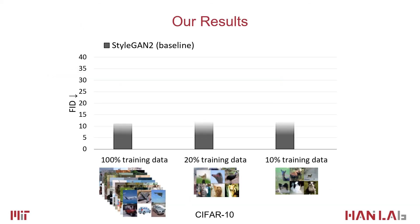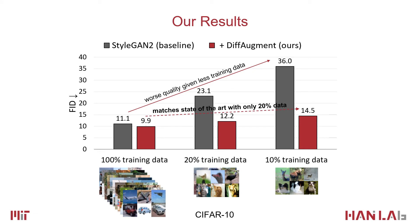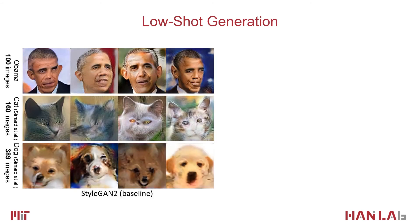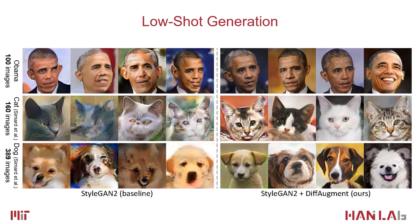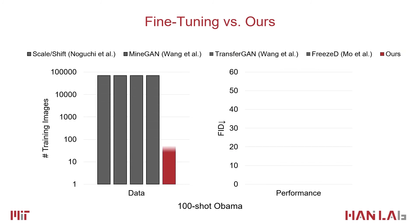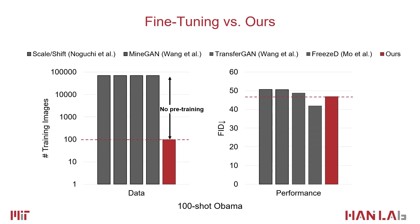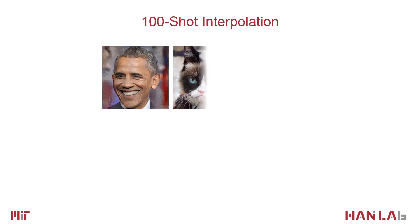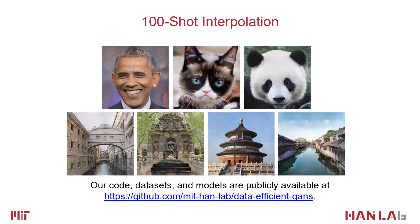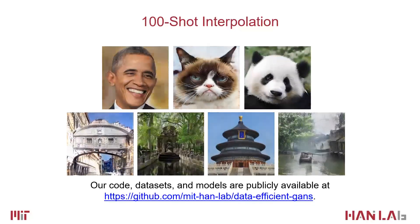With DiffAugment, our method can match the top performance on CIFAR-10 and CIFAR-100 using only 20% of training data. Furthermore, our method can generate high-fidelity images and significantly improves StyleGAN-2 even on those tiny datasets. Compared to existing transfer learning algorithms, our method requires 700 times less training data while achieving competitive performance. Our method can generate smooth interpolation results of diverse facial expressions, poses, and landmark perspectives, with only 100 shots on these datasets without any pre-training.